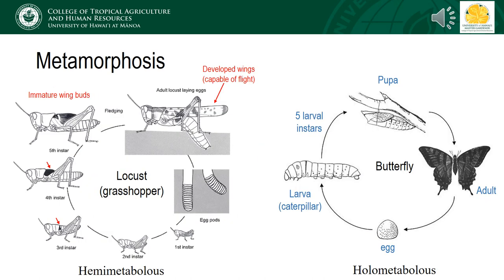In entomology, metamorphosis is the term we use to describe insect development from egg to adult, and there are two means by which this can occur. In the most evolutionary basal, or the oldest insect groups, we see a hemimetabolous development pathway. This means that the adult female lays eggs, which then hatch into a mini version of the adult. As the insect ages, it molts to shed the exoskeleton and allow growth.